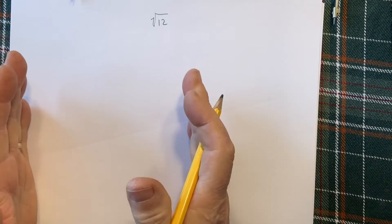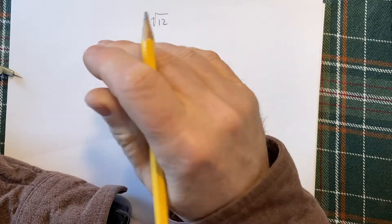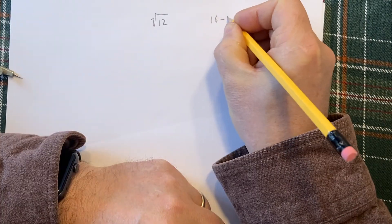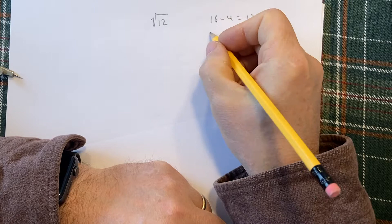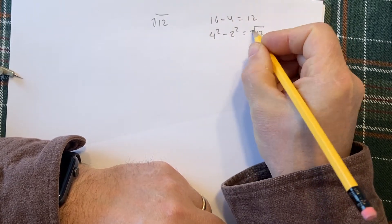Square root of 12. I'm going to do it much smaller so I don't have to cheat and use a ginormous compass. Looking for two perfect squares that add up to give us 12, or subtract to give us 12. 16 and 4. 16 take away 4 is equal to 12. The 16 is 4 squared, take away 2 squared is equal to root 12 squared.